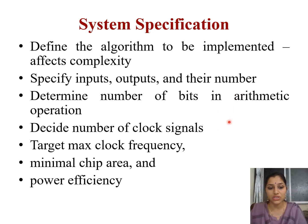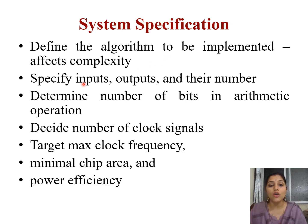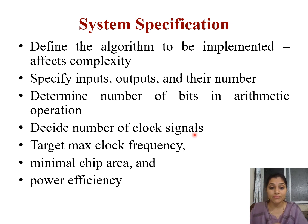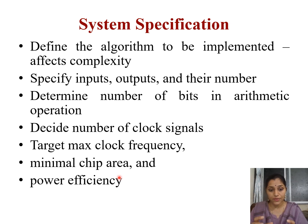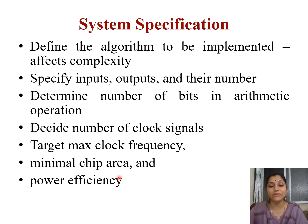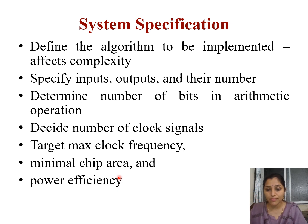So, first is specifications — your specifications must be ready before you design something. Specifications include: how many inputs and outputs, the number of bits in those inputs and outputs, how many clock signals, what is the clock frequency, maximum clock frequency, how much area on chip the circuit will occupy, and how much power it will consume. Power consumption is very important since many devices are portable, like laptops and mobile phones running on batteries. So the circuit must consume minimum power, and you must mention power efficiency in the specifications.